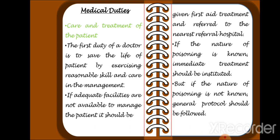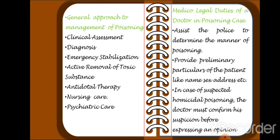If the nature of poisoning is not known, the general protocol should be followed. Every hospital, government or private, is under a legal obligation to treat all cases of poisoning irrespective of the nature or manner of the poison. No case can be turned away on the pretext that the hospital is not authorized to handle medico-legal cases — this is a wrong practice and constitutes malpractice.